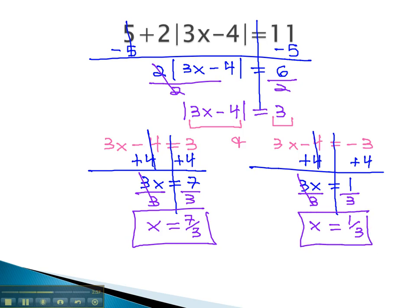We now have our two solutions, which we found by first getting the absolute value alone, and then considering the positive and negative solutions. Let's try one more example where we can see this pattern work out.